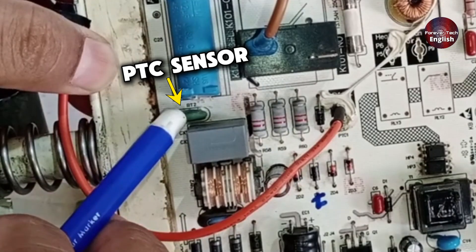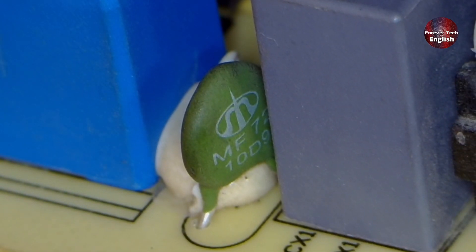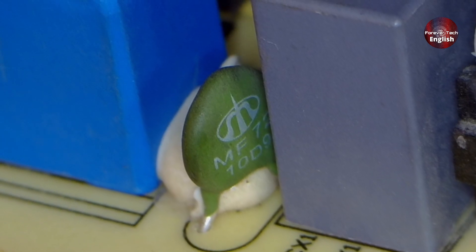Next, you can see there is a PTC sensor here. Its job is that if the voltage becomes too high, and if there is any problem inside the PCB, it will increase its resistance and heat up, which will prevent voltage from passing through, and no further issues will occur.